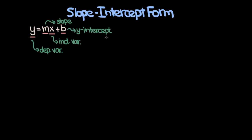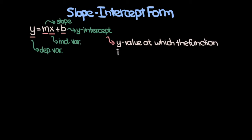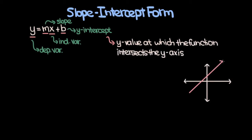Now let's focus in on the y-intercept. The y-intercept is the y-value at which the function, or the line in this case, intersects the y-axis. So if we have some line, then the y-intercept is the y-value of the point where the line intersects the y-axis.